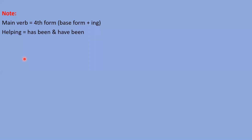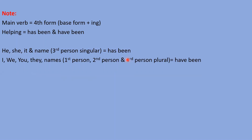Now let's understand helping verbs. In main verb we don't have any options — fourth form, meaning the ing form, we will always use. For helping verbs, we have two options: 'has been' or 'have been.' In which condition do we use 'has been'? If our subject is third person singular — he, she, it, or any name — then we use 'has been.' With the rest of the subjects — I, we, you, they, or names in first person singular and plural, second person, and third person plural — we need to use 'have been.'